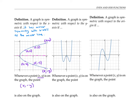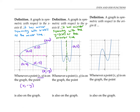We say that a graph is symmetric with respect to the y-axis if it has mirror symmetry with the y-axis as the mirror line. This graph is symmetric with respect to the y-axis. Here's the mirror line. Notice that the point (2, 3) is on this graph. Its mirror image, which is also on the graph, has coordinates (-2, 3) — the same y coordinate but the opposite x coordinate.